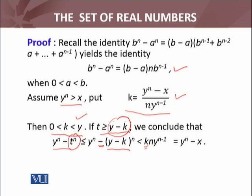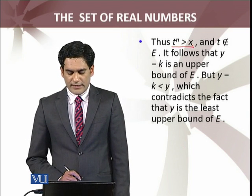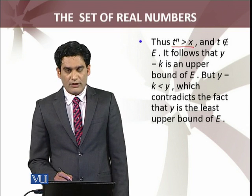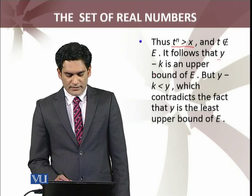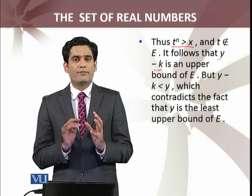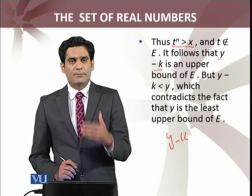By the property of k, the structure I defined—if you put it here, the denominator will be here, and this will cancel out. We are left with y^n - x. In fact, what we have shown is that t^n > x, and t does not belong to E. It follows that y - k is an upper bound of E.